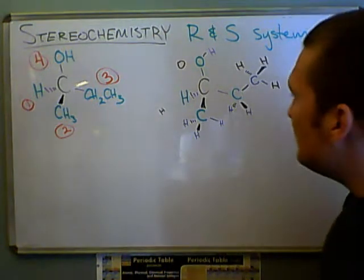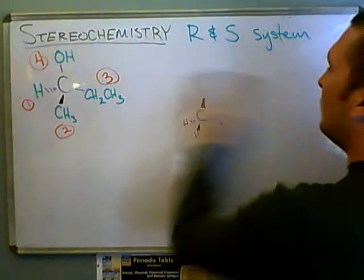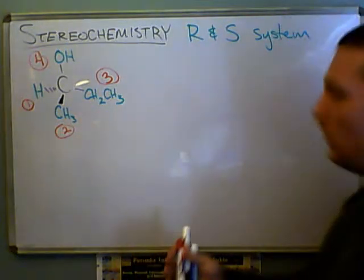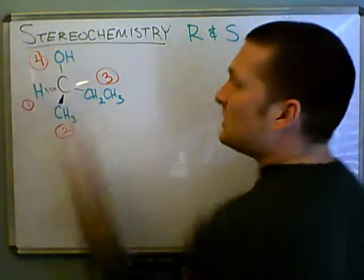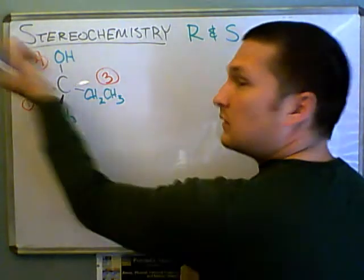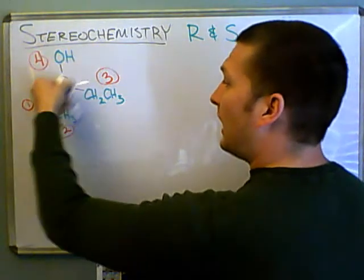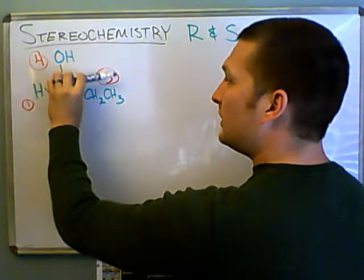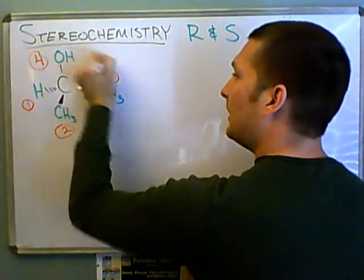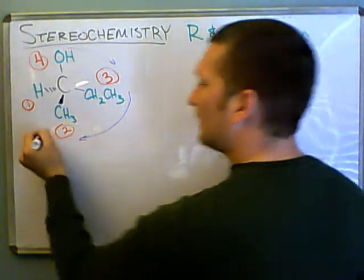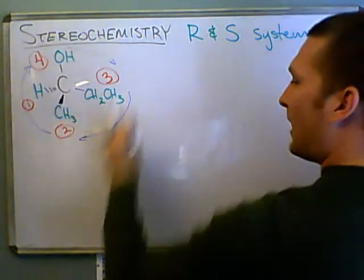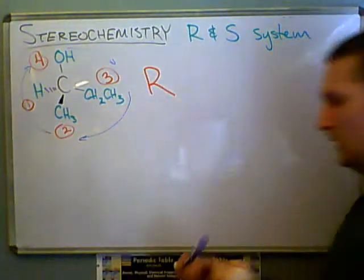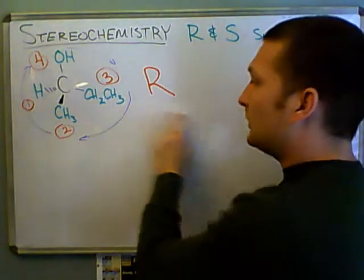We see whether the next ones go in a clockwise or counterclockwise fashion. I'm going to start with the heaviest one and then go to the lightest. Just like a minute hand going around a clock, we're going to start with the heaviest and go to the lightest. So, we start with four, three, and then two. We see that that makes a clockwise motion around like this. Since that's clockwise, that gets the R for right-handed. There you go. So, this molecule is R.